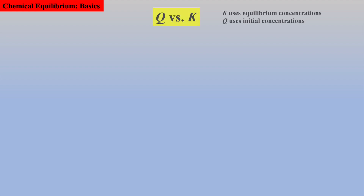At this point, it is worth examining Q versus K more thoroughly — Q is calculated from initial concentrations and K from equilibrium concentrations, respectively. There are three different possibilities for Q when compared to K: Q can be equal to K, Q can be greater than K, and Q can be less than K.